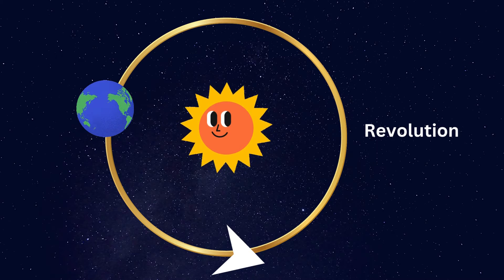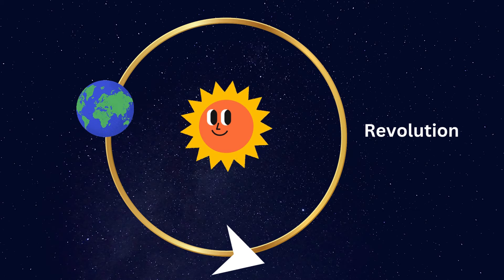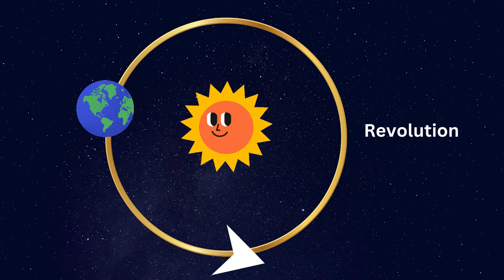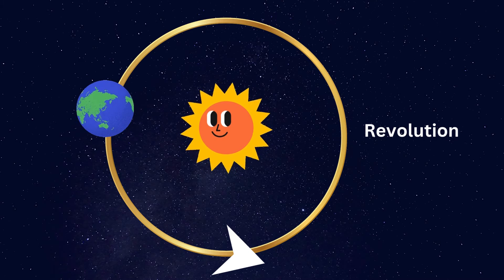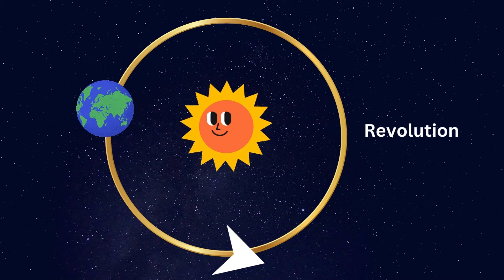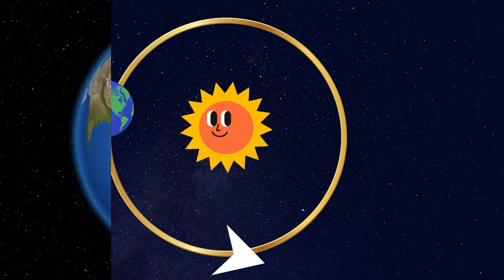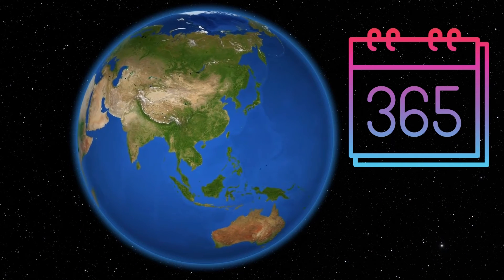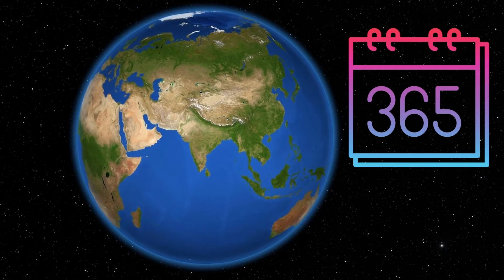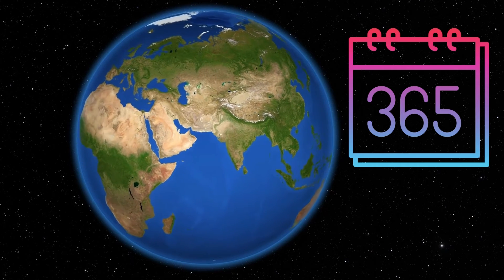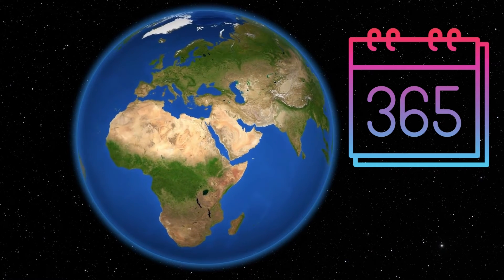One full orbit all the way around the sun is one revolution, and the Earth takes 365 days to complete a revolution. That makes up a whole year, and our calendar shows 365 days in a year.